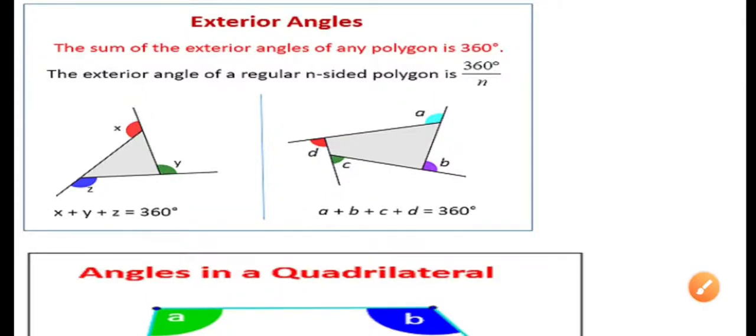Children, now let us see what exterior angles are. The sum of the exterior angles of any polygon. Note children, the sum of the exterior angles of any polygon is 360 degrees.